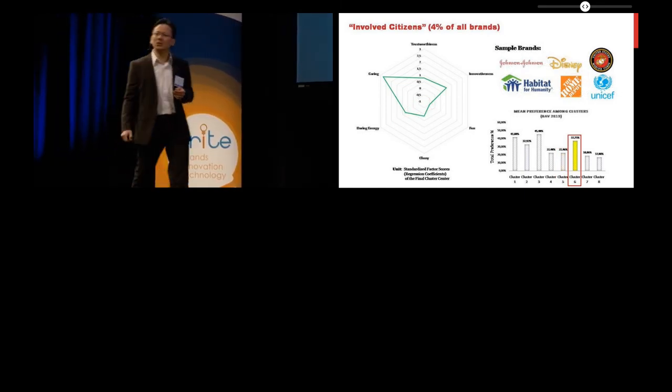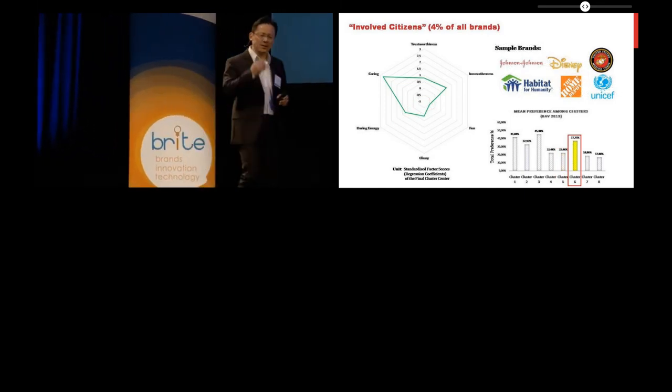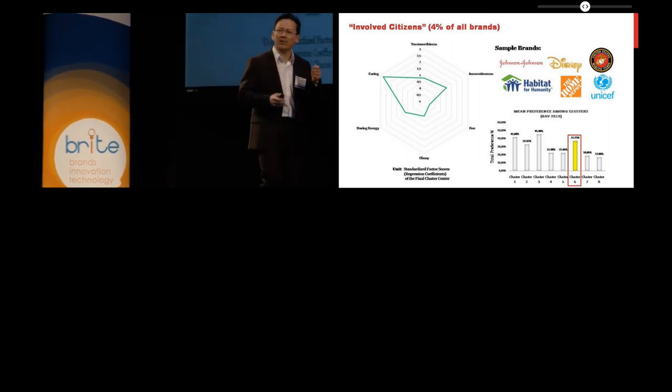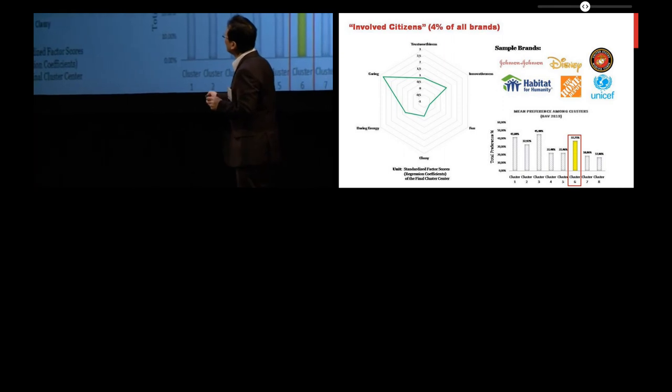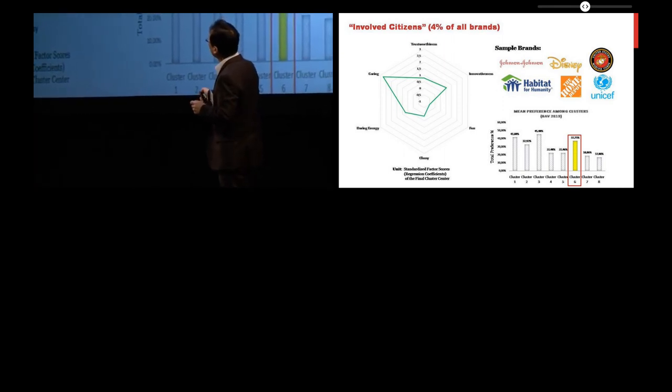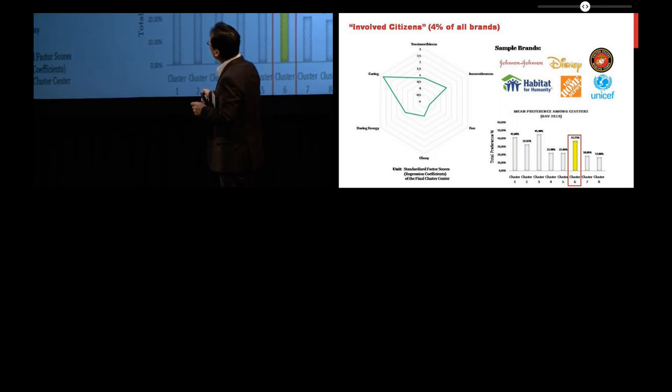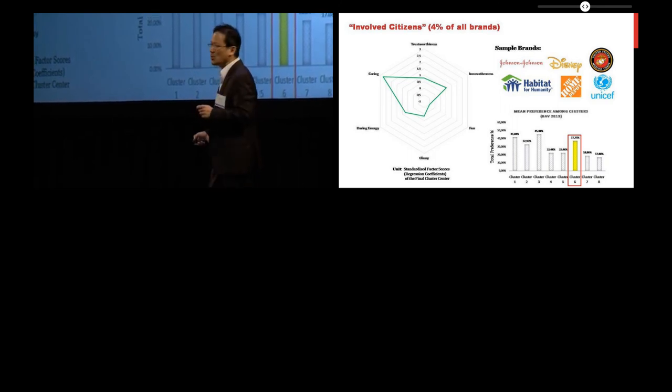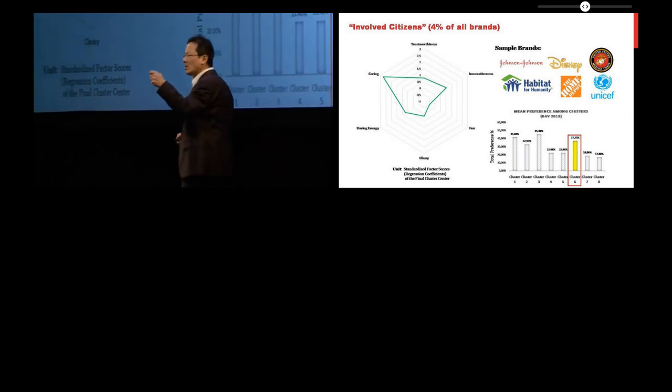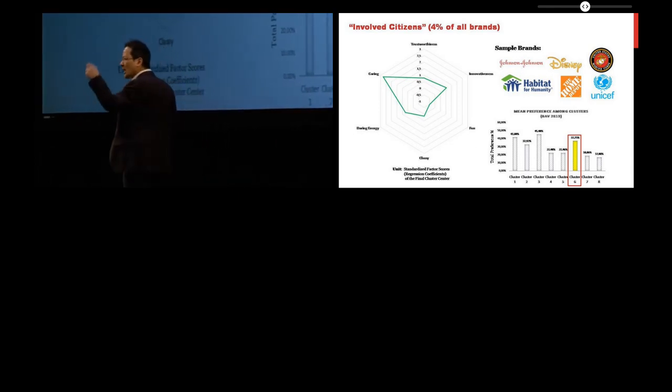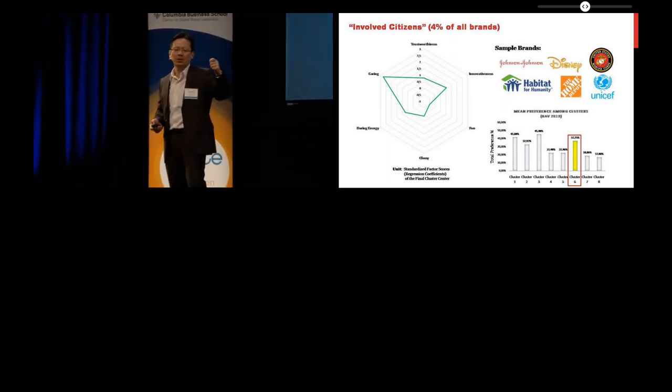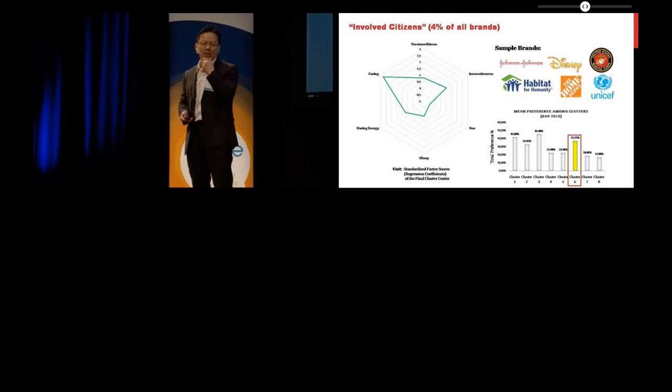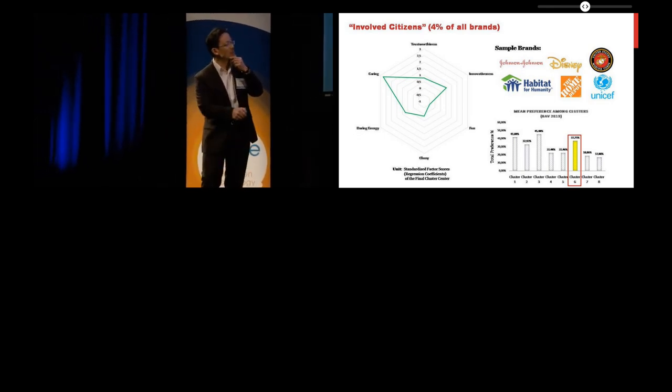Then we have here, and this is an interesting one, the involved citizens. These are the brands that are defined largely by being caring, but notice they are caring and that's not enough to be caring. You need to be good on other dimensions. So they're doing well on trustworthiness, on innovativeness, on classiness, et cetera. So caring is not enough, I'd say. It doesn't carry the day, but having caring on top of other things, doing okay on other drivers of brand character seems to be very helpful here, and you see those brands are doing quite well.